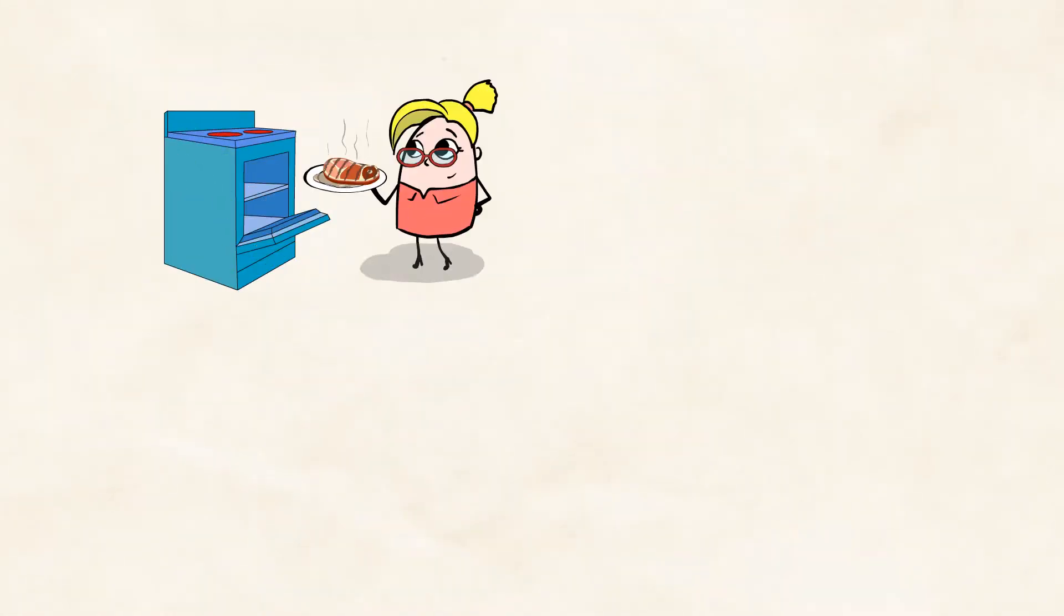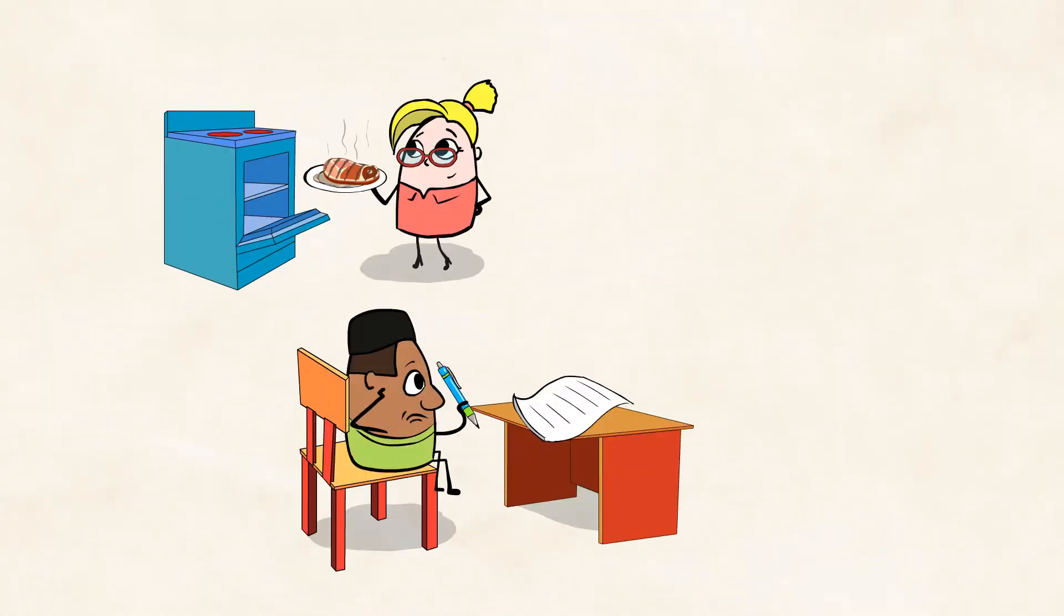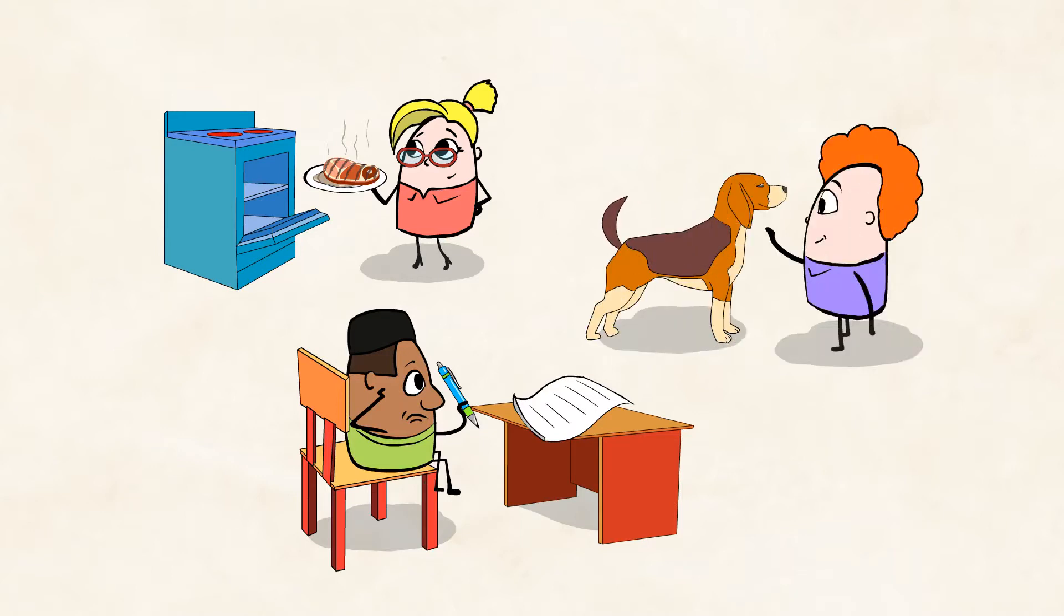You can probably see someone or something moving or in motion. Your mom might be cooking dinner, your brother might be writing his homework, your dog might be wagging its tail.